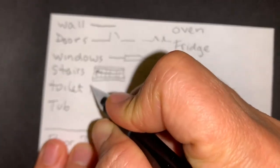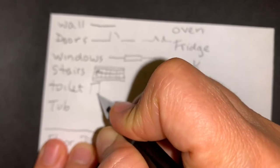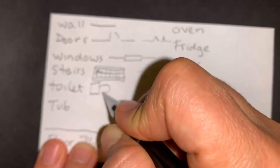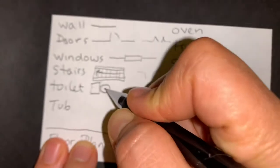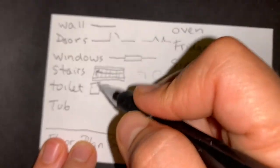Toilets. Rectangle and circle. So this is the water tank and this is the toilet bowl area.